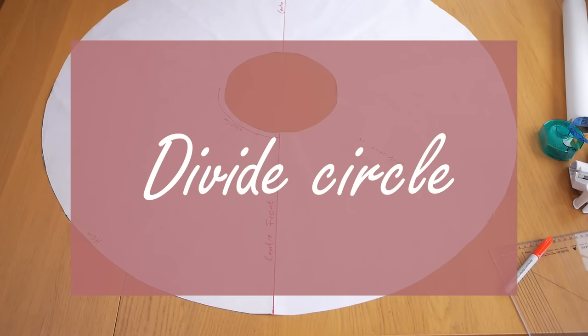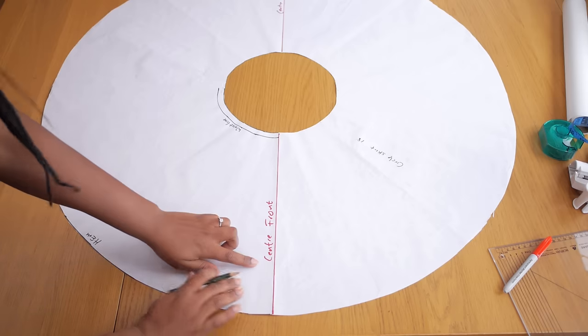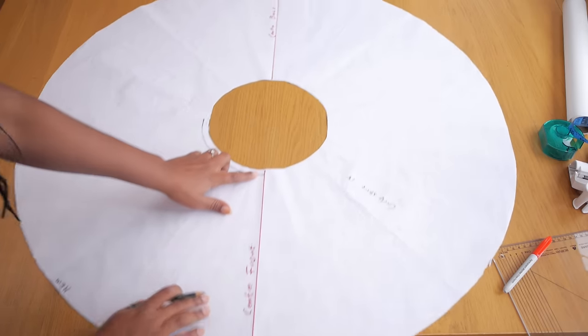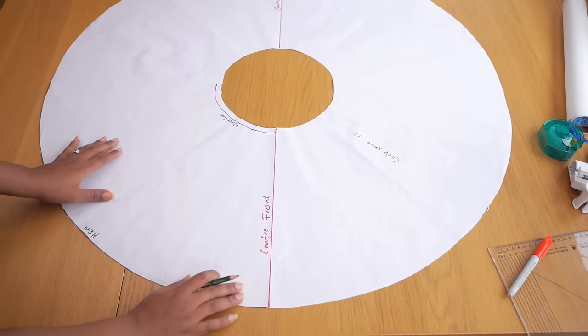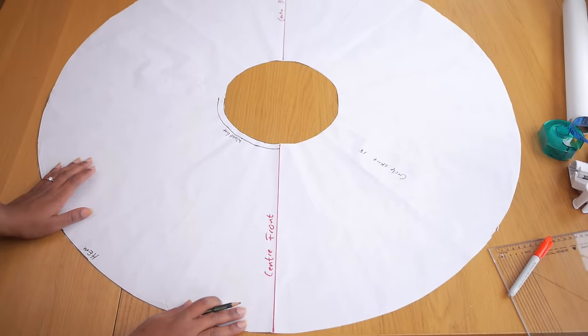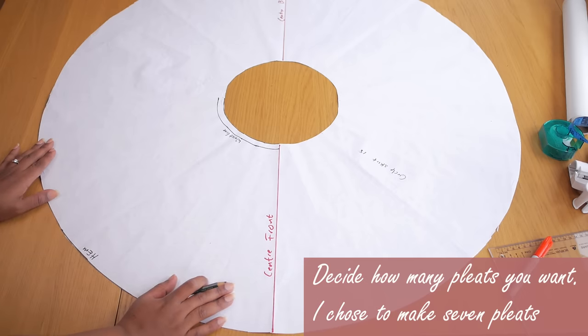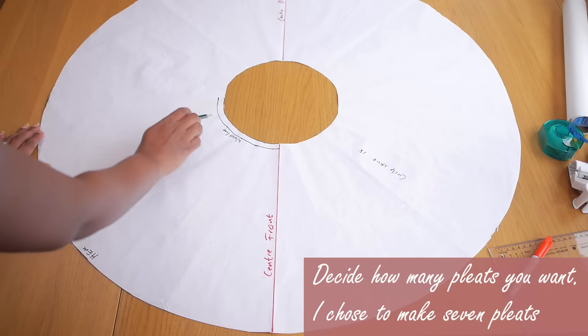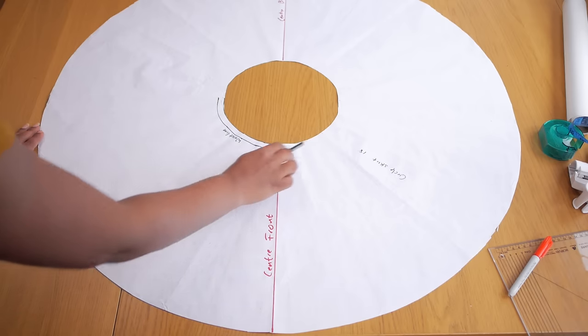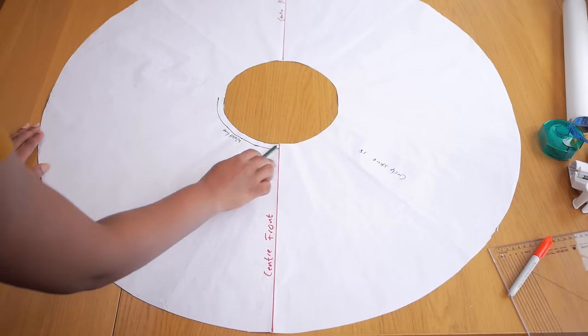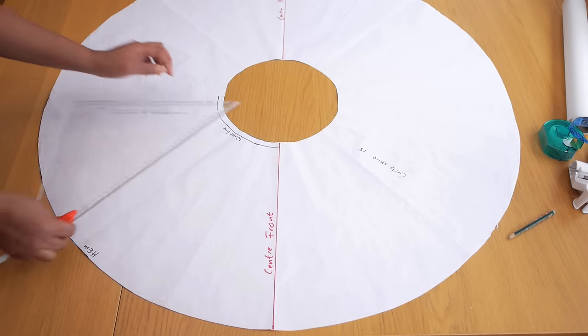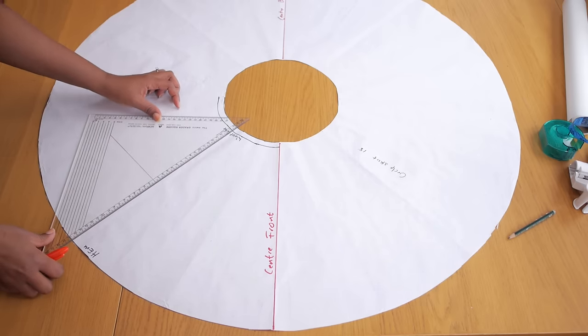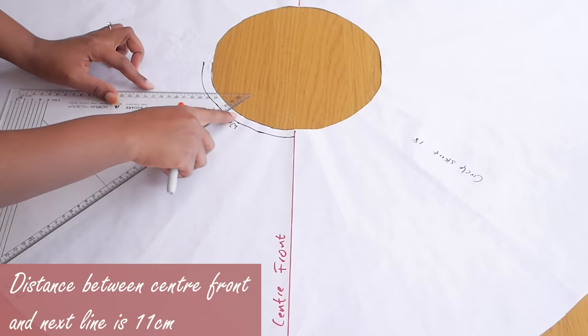The first thing you want to do is divide your circle. I've marked where I want my center front and center back to be because I want to keep that center back open for a zip later on. My waist circumference is 30 inches or 76 centimeters, and I want to create a total of seven pleats. The number of pleats you want to create is what you would use to divide your waist measurements, and that helps you know how far apart your lines should be.